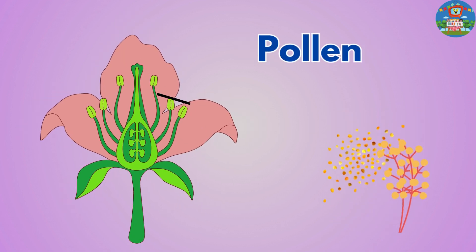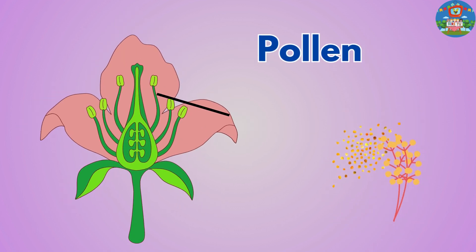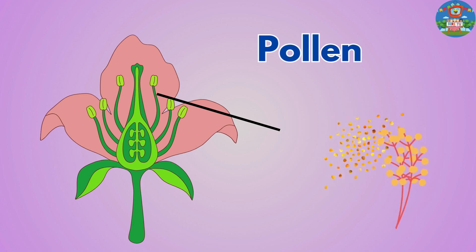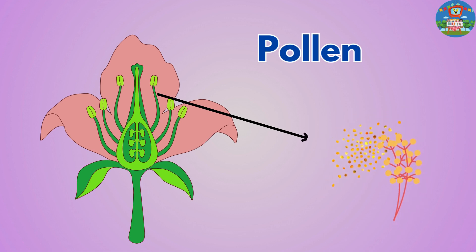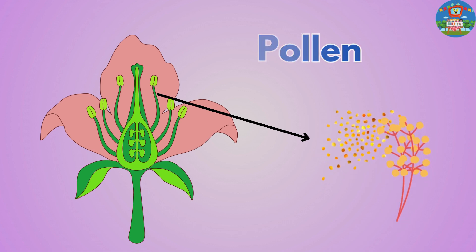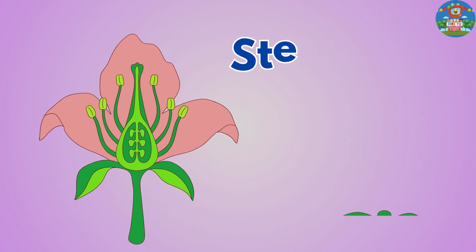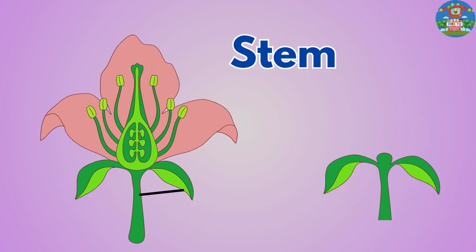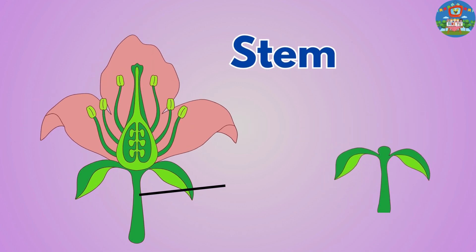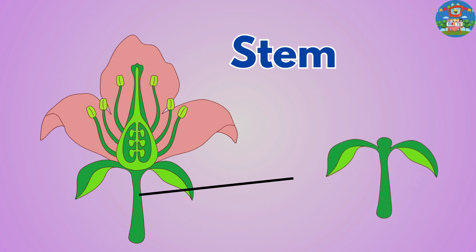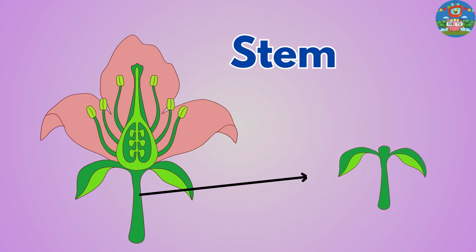Pollen. Pollen is a fine powder produced by the anthers of a flower and is transferred to the stigma for pollination to occur. Stem. The stem of a flower holds it upright and carries water and nutrients from the roots to the rest of the plant.